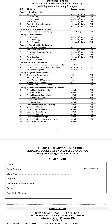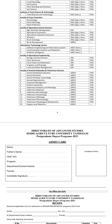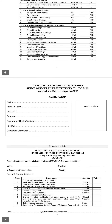In some departments, both PhD and Master's programs are offered, while in others only specific programs are available. Additionally, DVM (Doctor of Veterinary Medicine), Animal Husbandry, and Veterinary Science programs are also offered. There are approximately 14 departments concerned with DVM programs at the university.